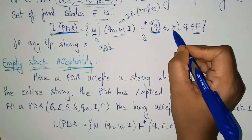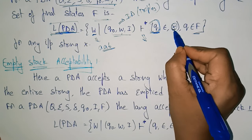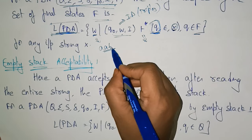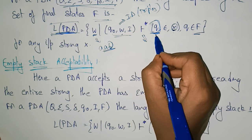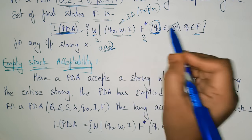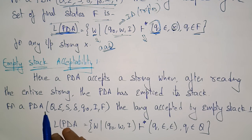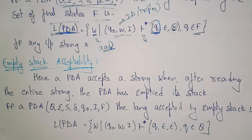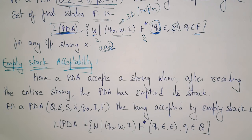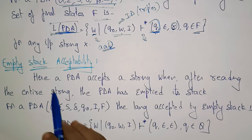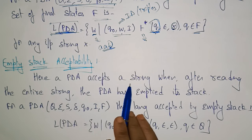For the input string, if it reaches the final state, then Q becomes the final acceptable state. Another way of representing PDA acceptability is empty stack acceptability. Either it should be final state acceptability or it should be empty stack acceptability. In empty stack acceptability, the pushdown automata accepts a string when after reading the entire string, the stack has been emptied.